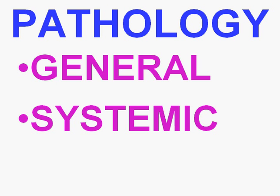I always remember that there are 10 systems in the body — respiratory, renal, and so on. The last 19 out of 29 chapters of Robbins are devoted to systemic pathology, while the first 10 are devoted to general pathology.